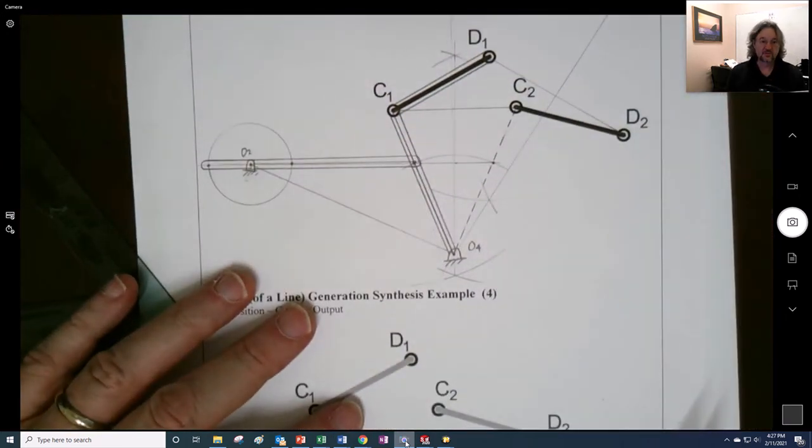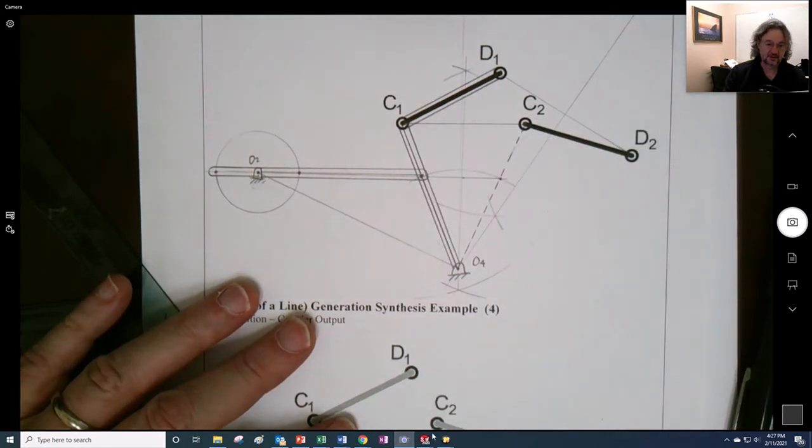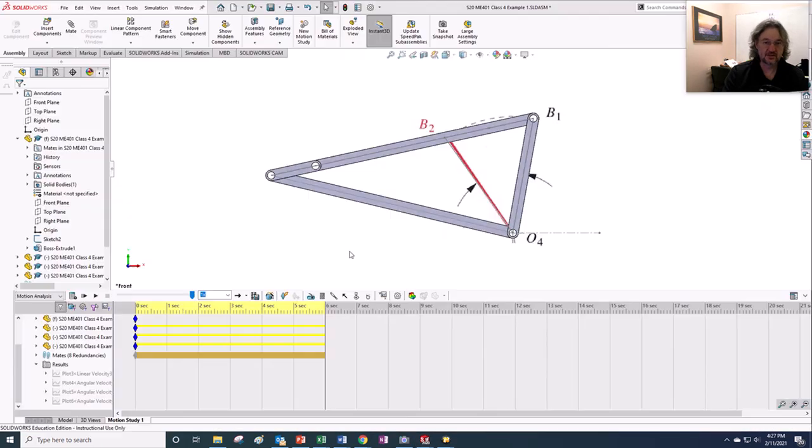So, there's what the mechanism looks like, right in here, to be able to go from that position to this position. And I've already made this example in SOLIDWORKS.